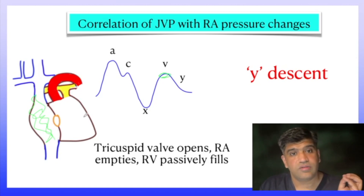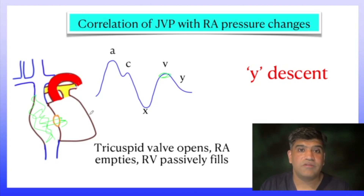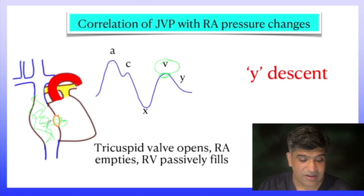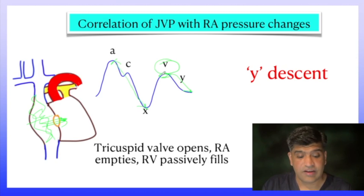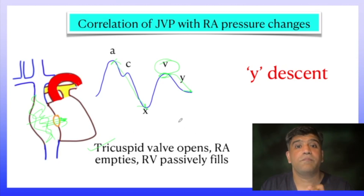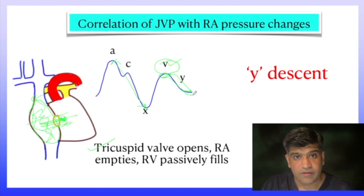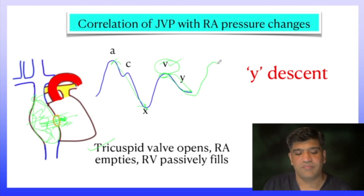After the RA is fully filled, it must throw blood into the right ventricle — so the tricuspid valve opens. When the tricuspid valve opens, RA pressure falls and there is a descent — this is the Y descent. The first descent (X) was due to relaxation of the RA; the second descent (Y) is due to emptying of the RA. The tricuspid valve opens, the RA empties, and the right ventricle passively fills. When the RA is about to empty fully, the atria contract to completely empty, giving the A wave again, then C, then X, then V, and the Y descent — completing the cycle.